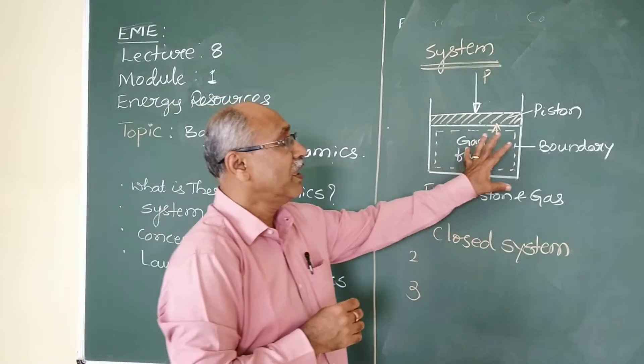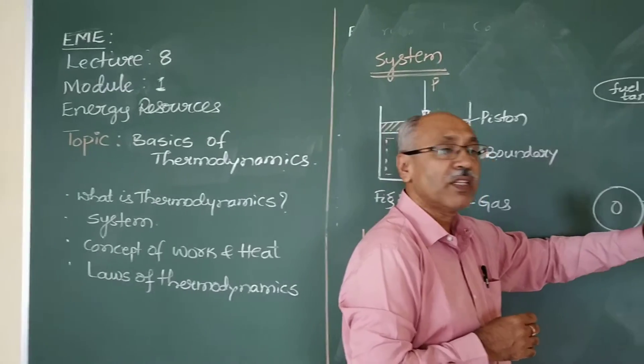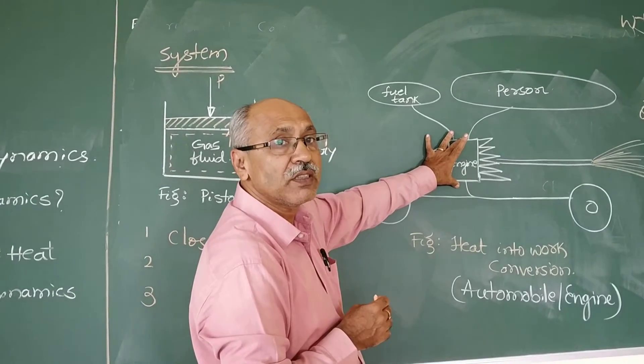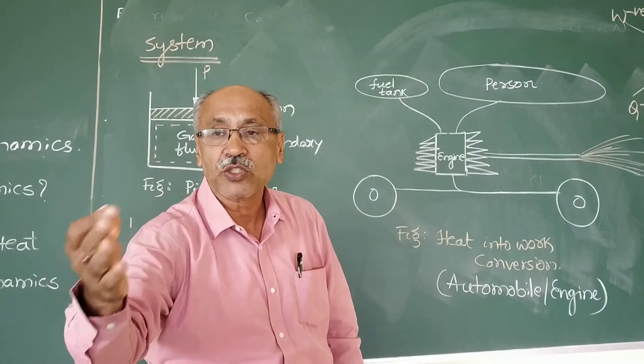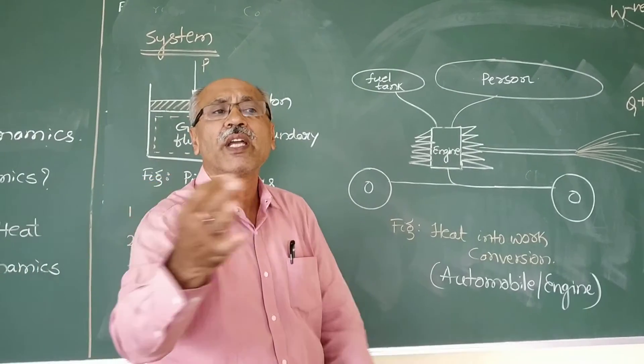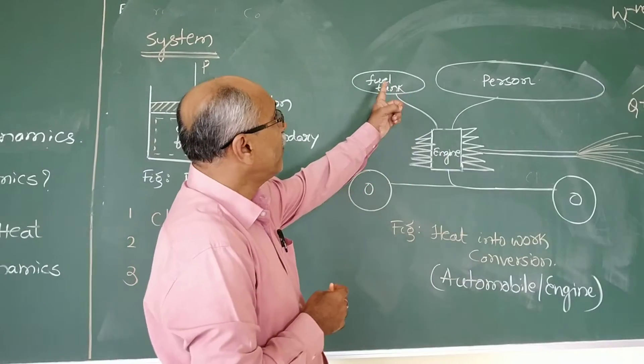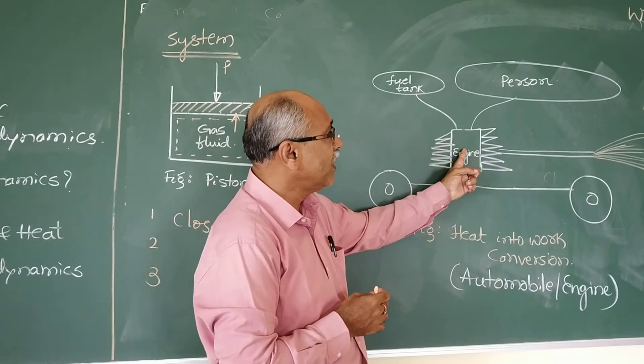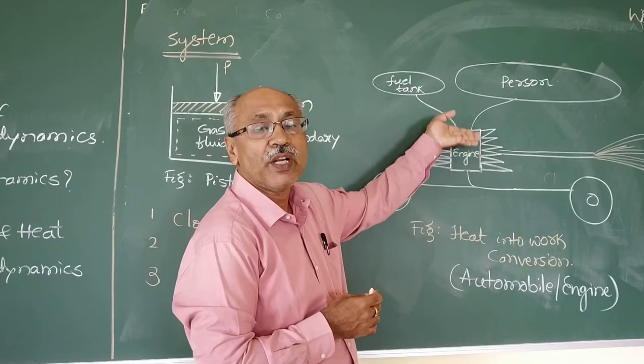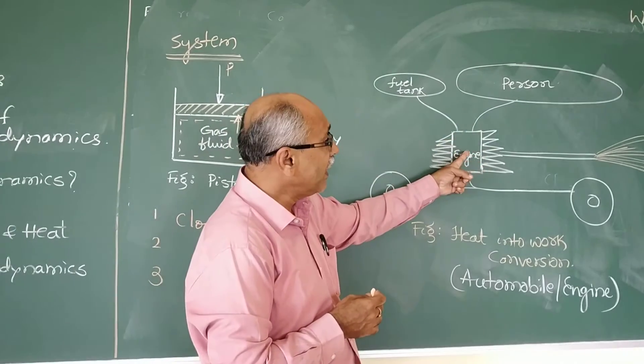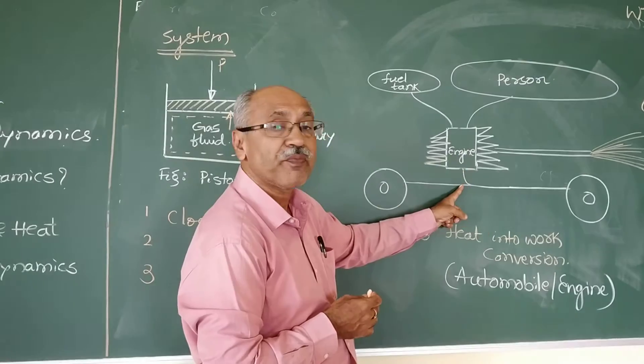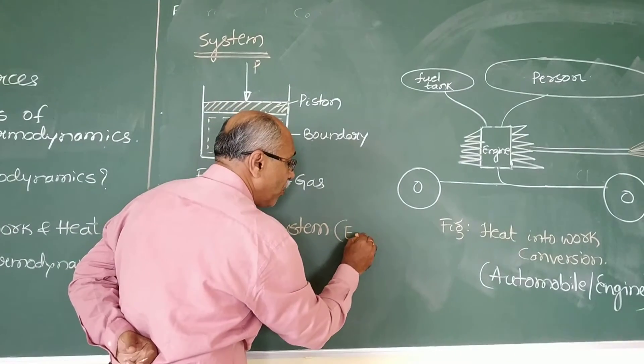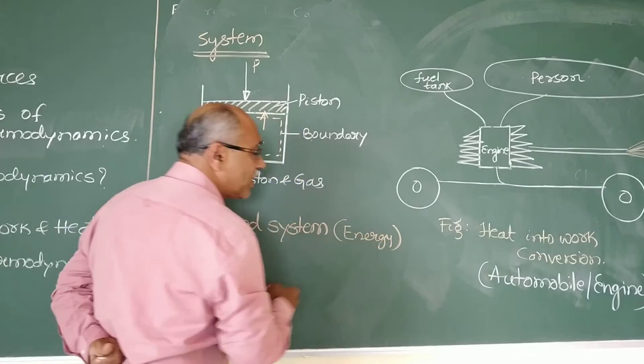For example, in an IC engine, which I will explain here with the help of this diagram. Look at this. This is an engine. You might have seen engines in bikes, cars, scooters. Every automobile vehicle has an engine. And that makes use of the fuel, either petrol or diesel or gas. When that fuel is supplied into the engine, some amount of heat is generated. And that energy transfer takes place from the system, but not the mass. That is what a closed system is. That means energy transfer alone.